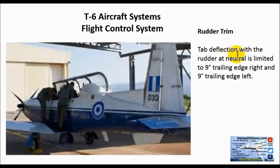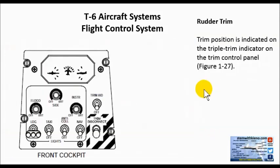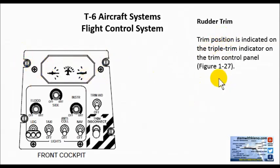The tab deflection with the rudder neutral is limited to 9 degrees left to right of the trailing edge of the rudder — 9 degrees is enough. Rudder trim is indicated on the triple trim indicator, and you could see that in your flight manuals at figure 1-27.